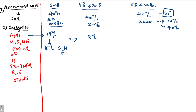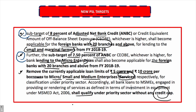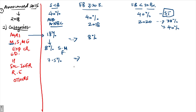The second sub-target is for micro enterprises only — not small and medium enterprises. The sub-target is 7.5% of adjusted net bank credit, and it is now applicable to foreign banks with 20 or more branches in India.